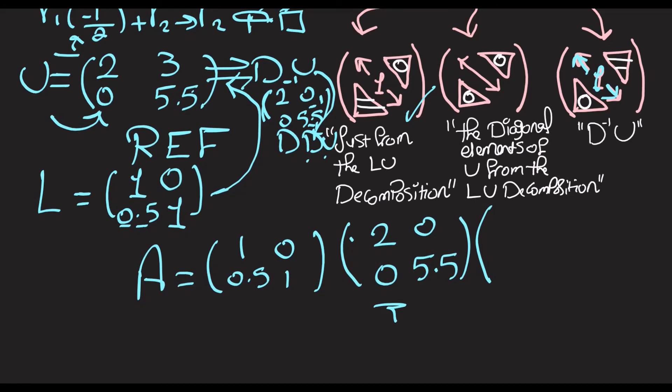Okay, so we're going to divide this row by 2, so we get 1 and 1.5. Then divide this row by 5.5, so we get 0 and 1.